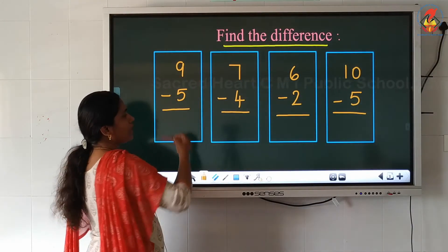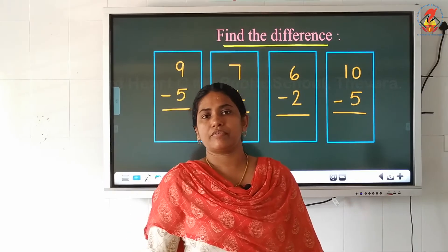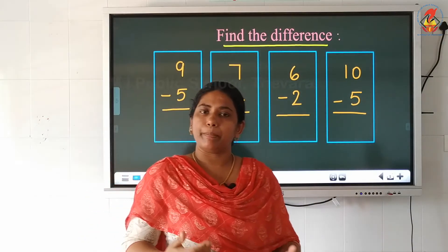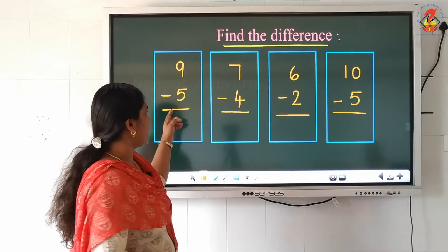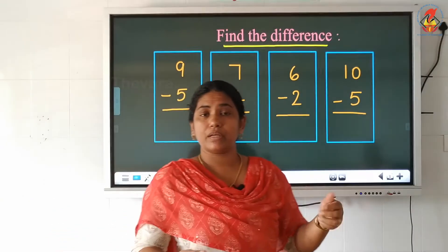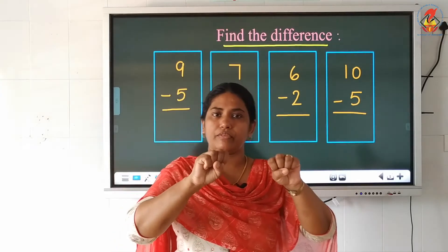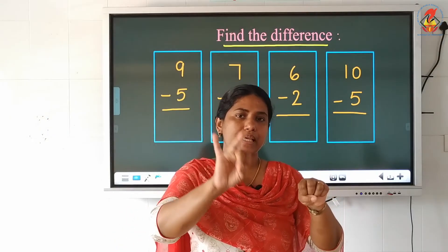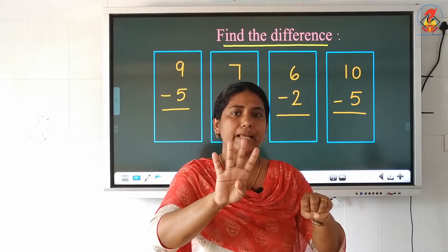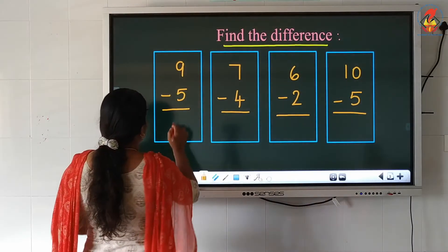9 minus 5. The same way we start counting after the small number to the big number. The small number is 5. So after 5: 6, 7, 8, 9. How many fingers did I raise? 4. So 4 is our answer.